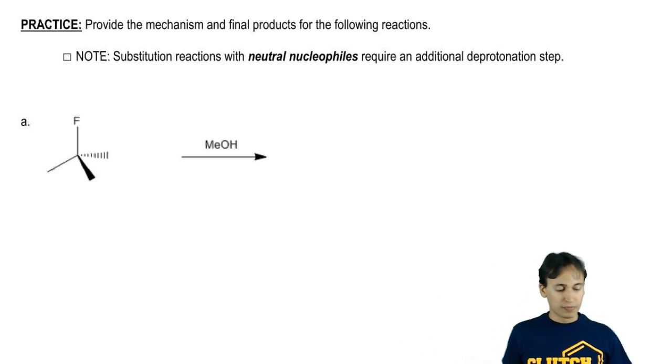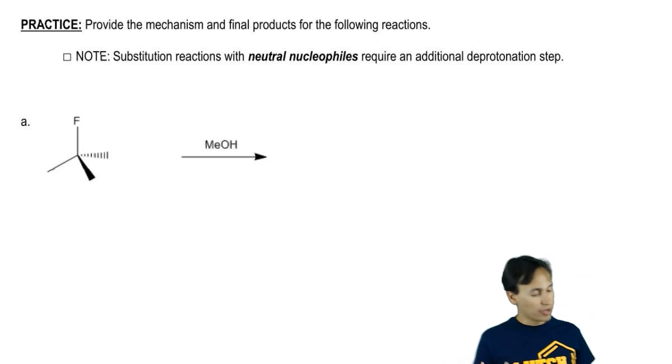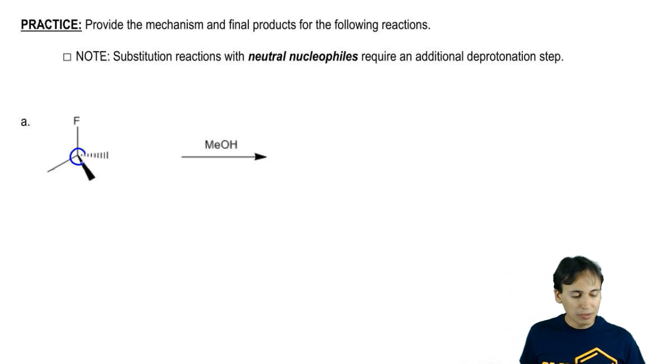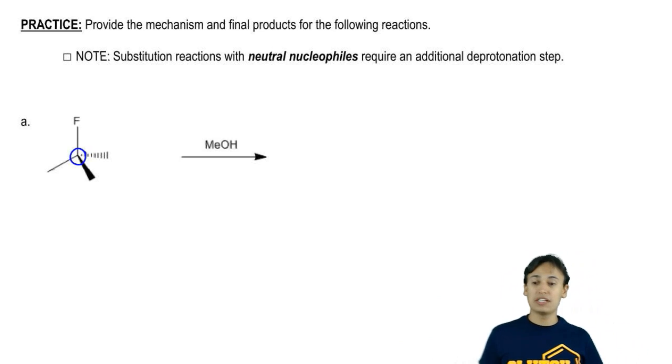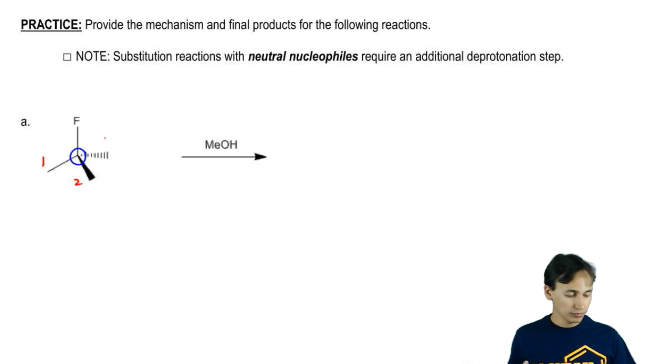The alkyl halide is what degree? What type of alkyl halide? The carbon it's attached to appears to be attached to three other carbons. That would make it tertiary. This is going to be a tertiary alkyl halide.